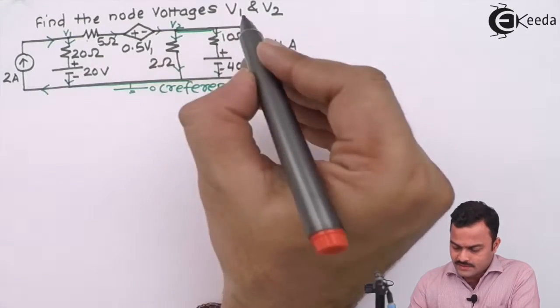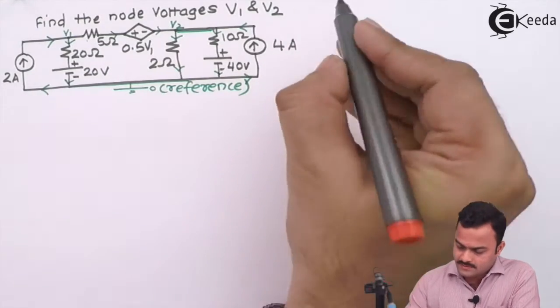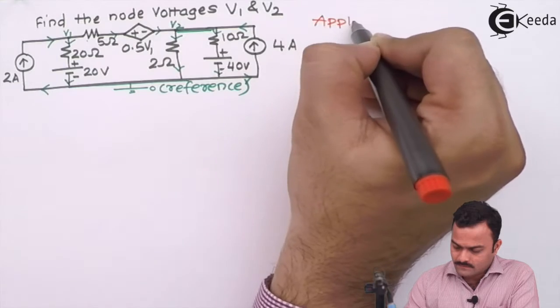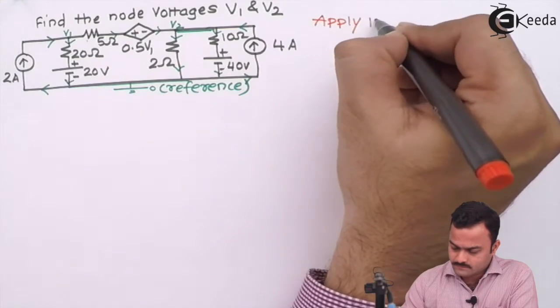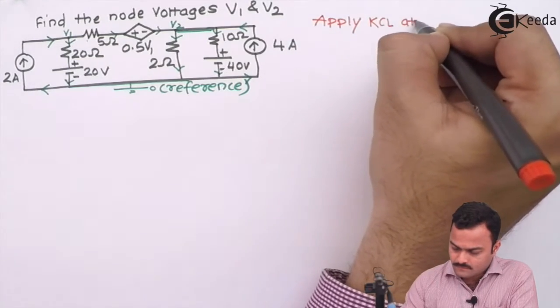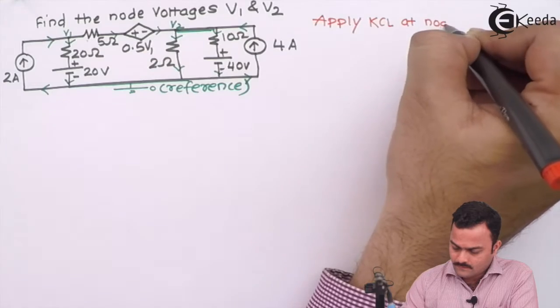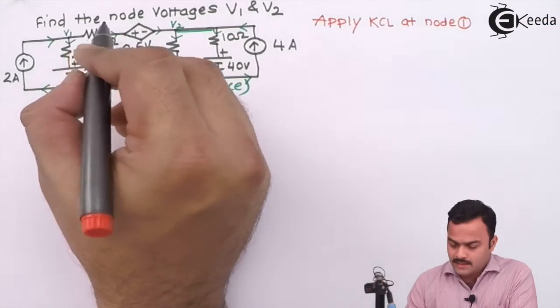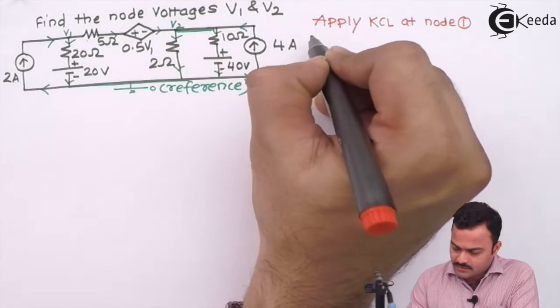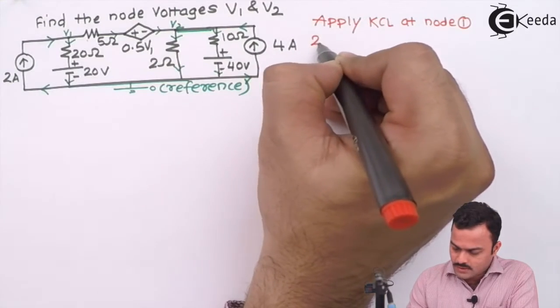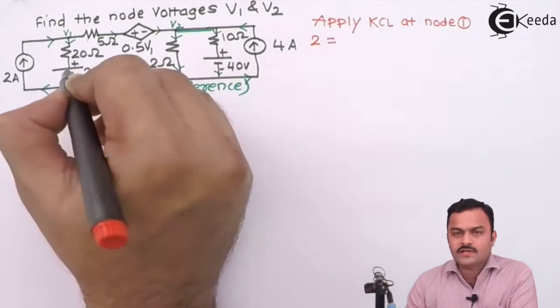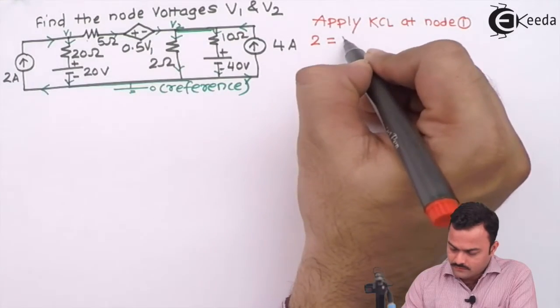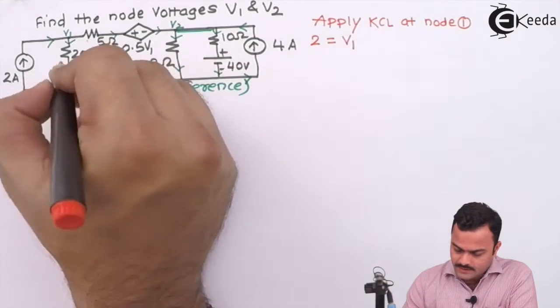Let's apply KCL at node 1. Three branches are meeting, out of that one is the incoming current with a constant current, so it's 2 ampere. So 2 on the left hand side of equation.